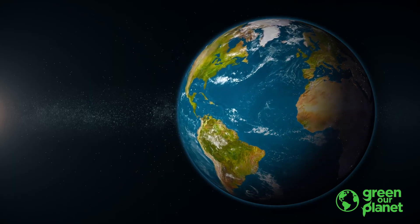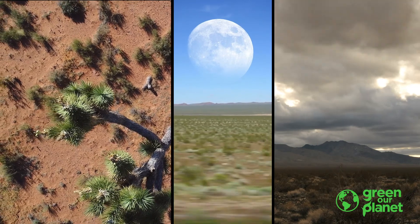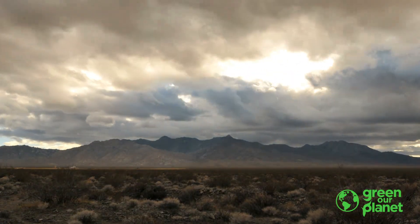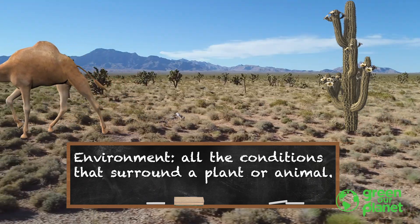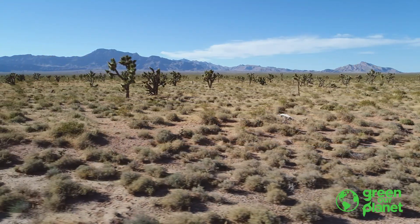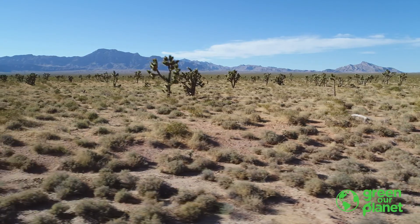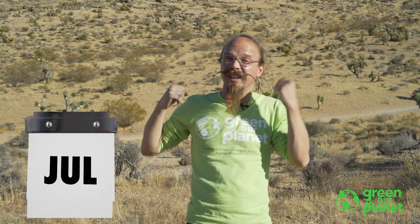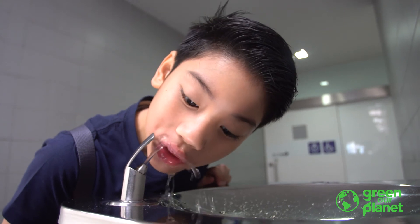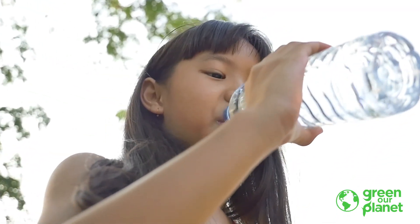Deserts cover one-third of the Earth's surface, and they are a very special environment. Do you know what an environment is? An environment is all the conditions that surround a plant or animal. For example, deserts are places that have very little rainfall. Rain sometimes doesn't fall for months, even years at a time. Can you imagine not having a drink of water for months or even years at a time? So, one characteristic of a desert environment is that it's a place that has very little rainfall.